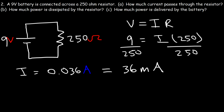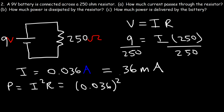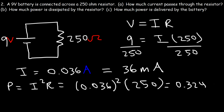Part B: How much power is dissipated by the resistor? Using P equals I squared times R, the current is 0.036 amps squared, multiplied by 250 ohms. 0.036 squared is 0.001296, and multiplying by 250 gives 0.324 watts, which is equivalent to 324 milliwatts.